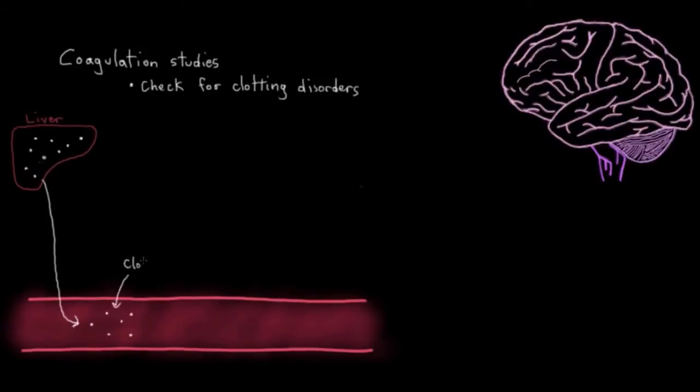You could do coagulation studies to check if the patient has an underlying blood clotting problem. This is slightly different to what we talked about earlier. Here we're talking about testing for problems with your actual blood clotting proteins that are made in your liver, the proteins that are primarily responsible for forming blood clots. Whereas earlier, we were talking about conditions of your blood cells that can predispose you to clots. So before, we were talking about blood cells, and now we're talking about the blood clotting proteins.